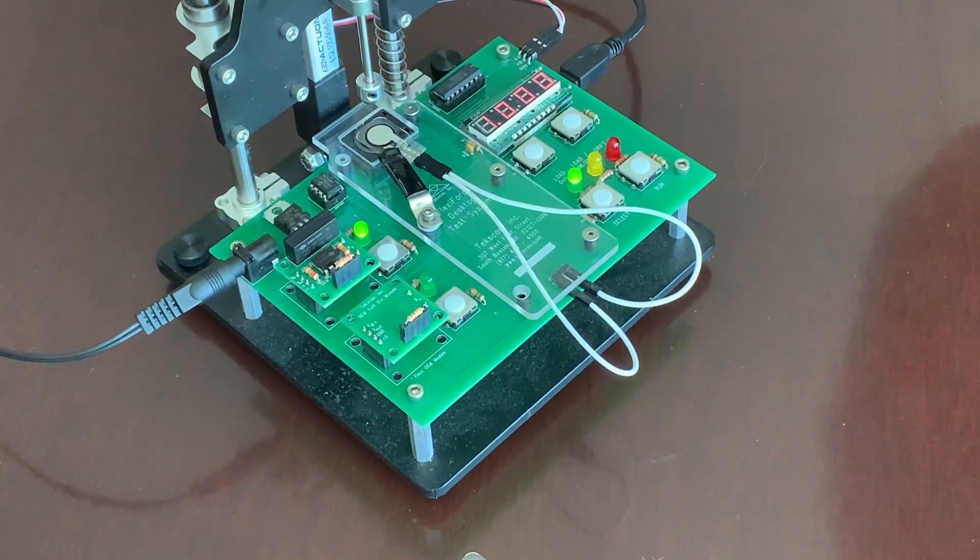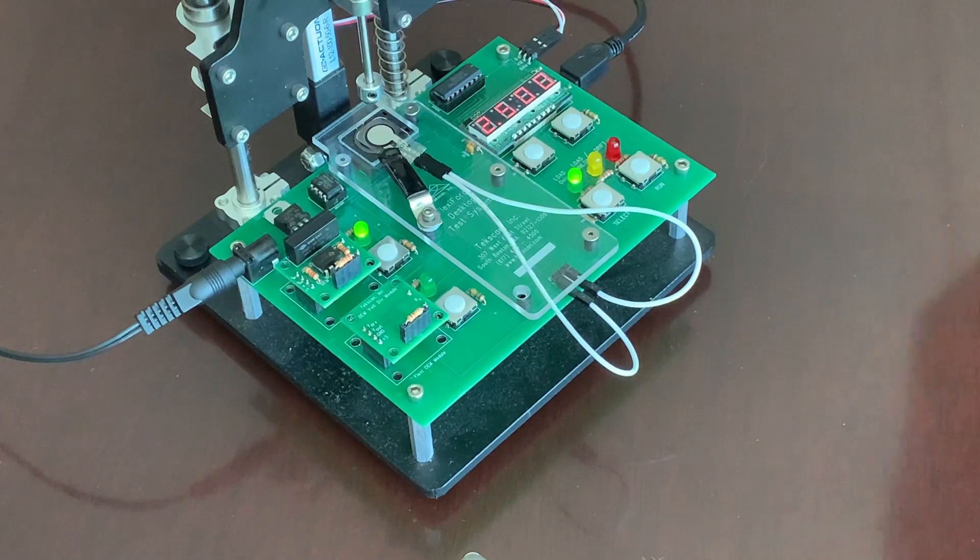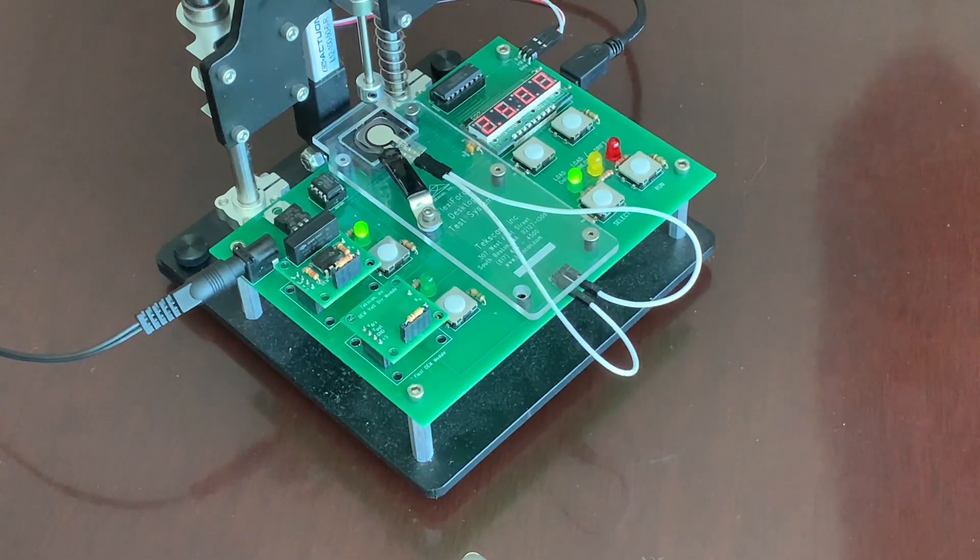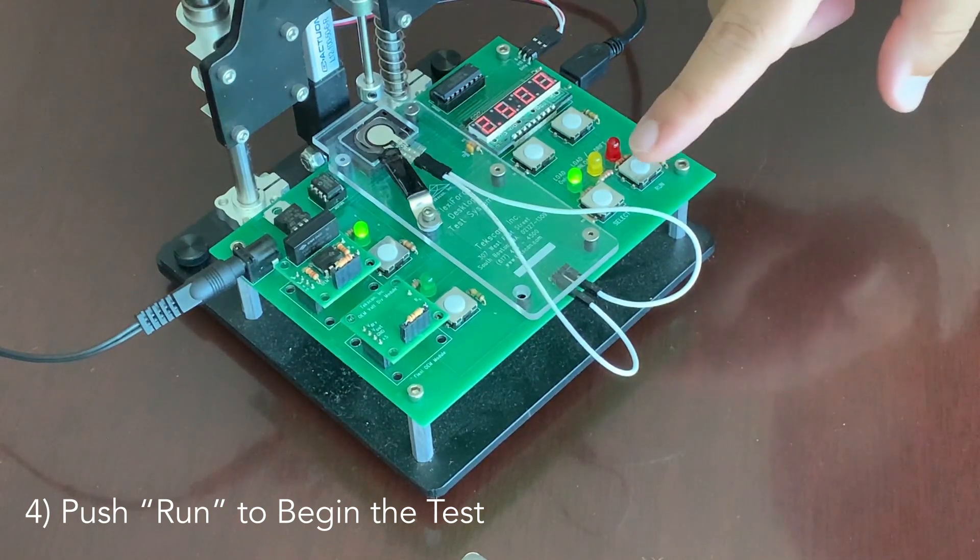And finally, we're going to set our reference voltage level to where we want it. It's currently at one volt. I think we want to go ahead and bump that up to two and a half volts. And now that we've got our board and components situated how we'd like them, we're going to start the test by just hitting run.